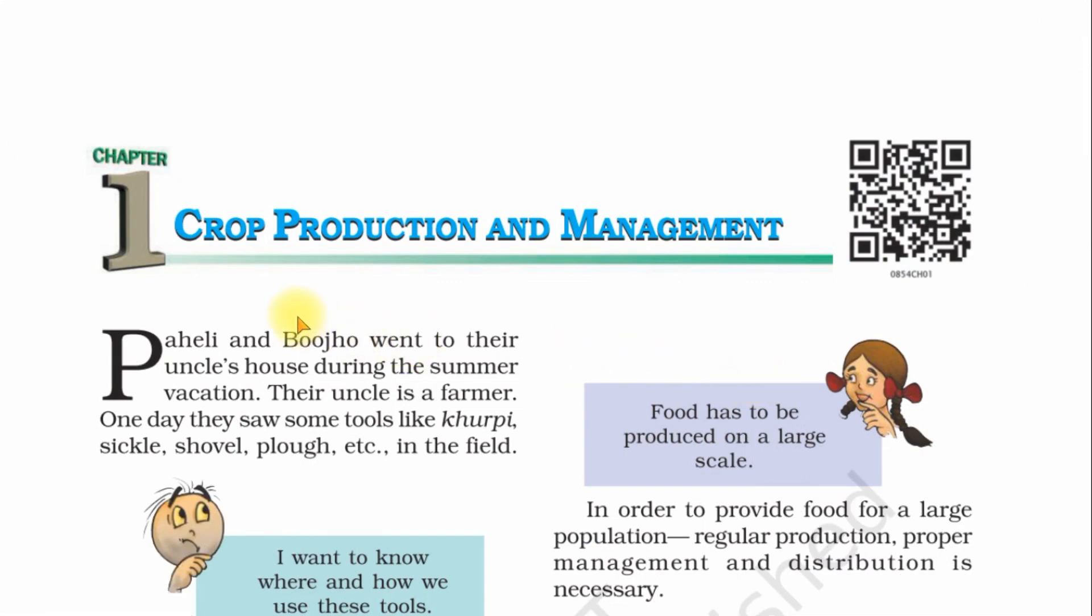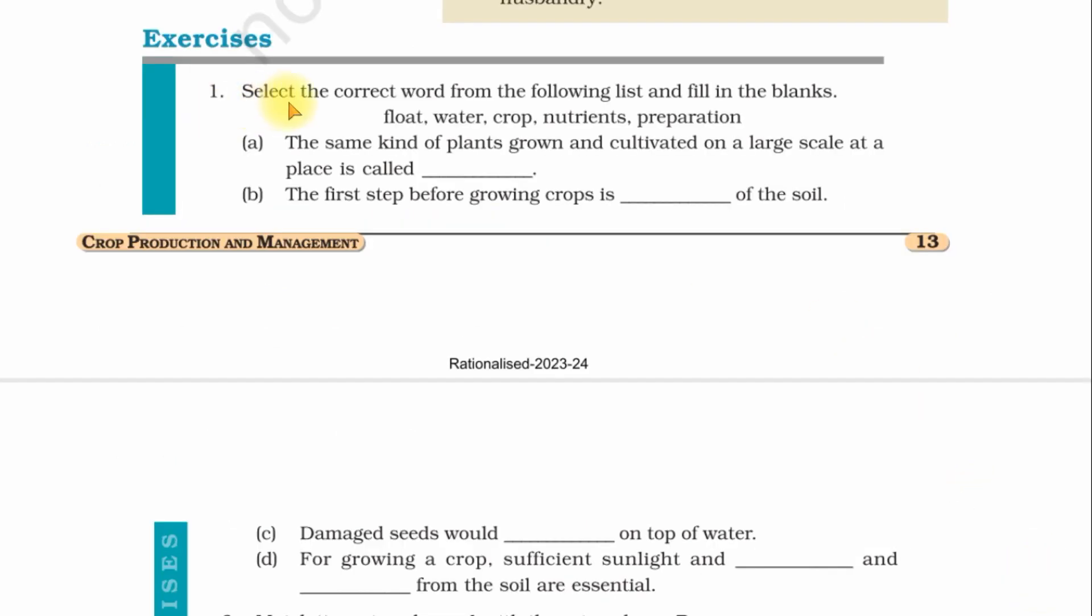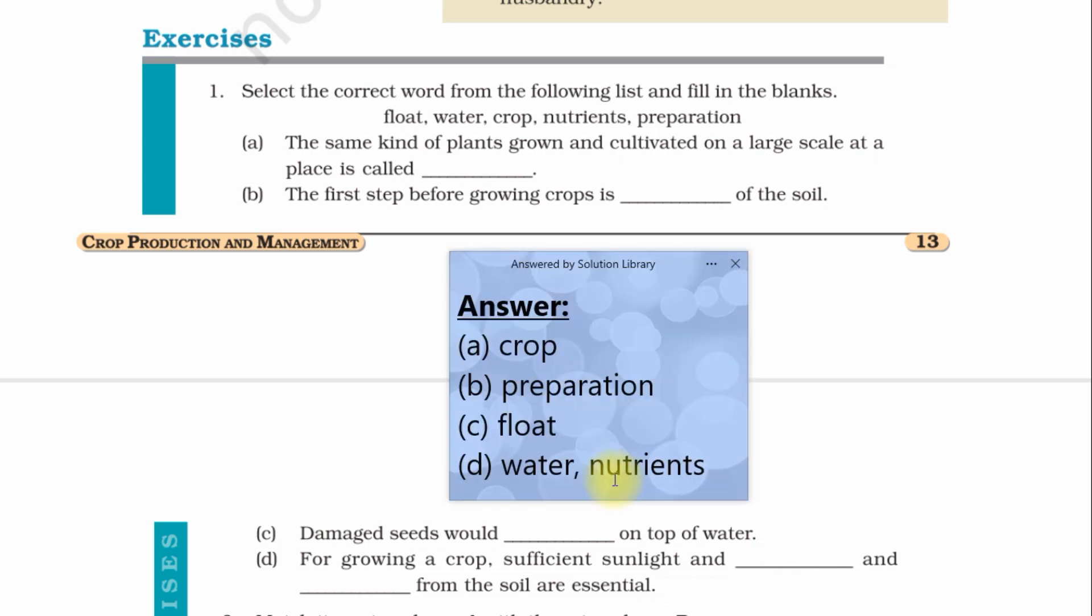Hello friends, in this video we will see the question answers of Class 8 Science Chapter 1, Crop Production and Management. First question is filling the blanks. Here are the blank spaces, you have to choose the correct word and fill the blanks. The answer of this question is given here.